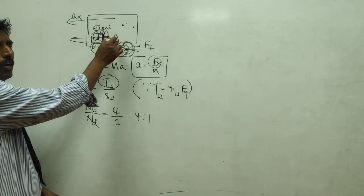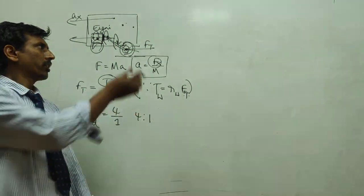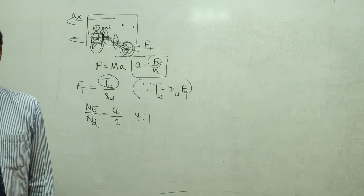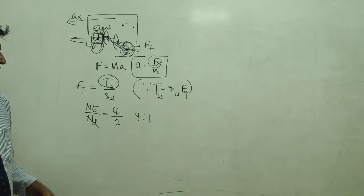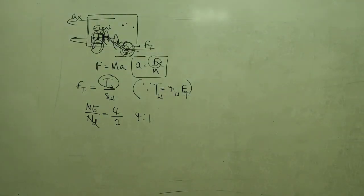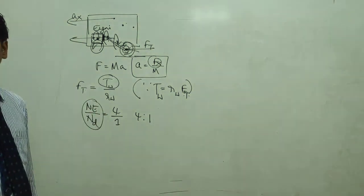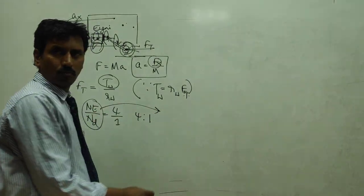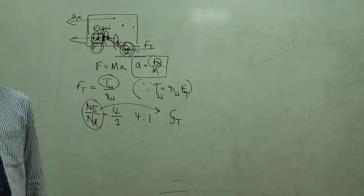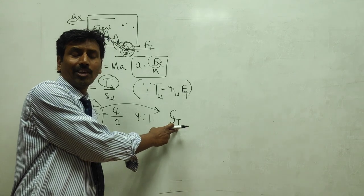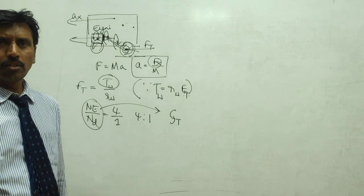In fourth gear the ratio becomes 1:1, meaning the engine speed and drive shaft speed are the same. If it is overdrive — fifth or sixth gear in some vehicles — the drive shaft rotates faster than the engine. We call this ratio GT, the gear ratio of the transmission.